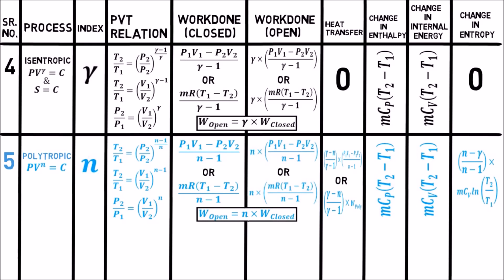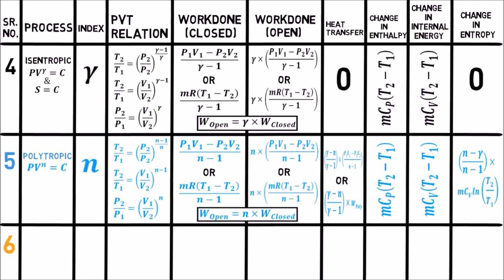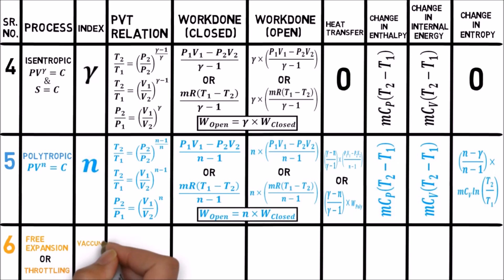These five processes are reversible processes. Let's see some irreversible processes also. Free expansion and throttling process are the most irreversible processes — please don't confuse between these two. When expansion happens against vacuum, it is known as free expansion. In throttling, there is no vacuum condition — it is simply flow through a narrow opening. In these processes, for ideal gases, both enthalpy and temperature remain constant.